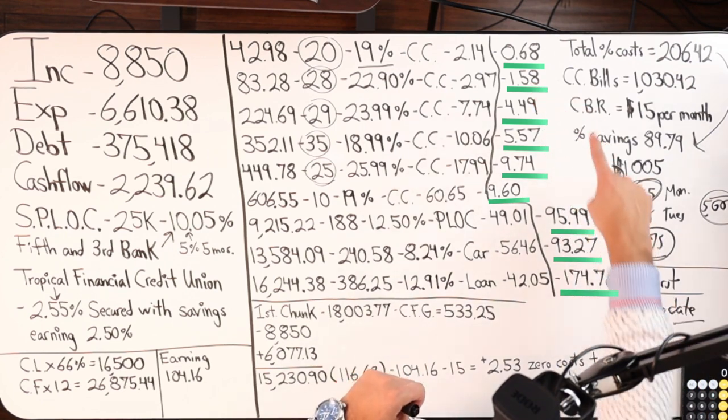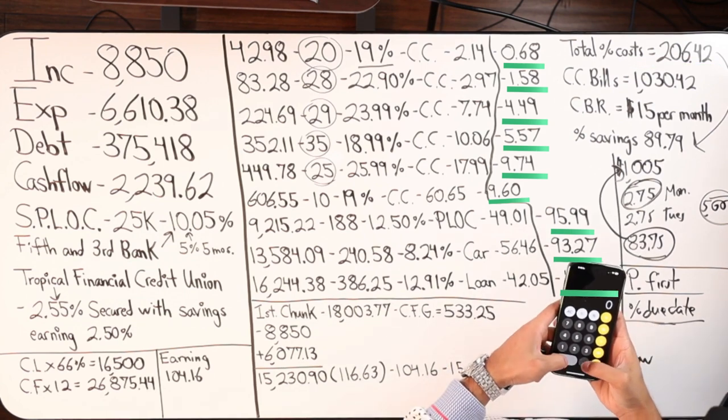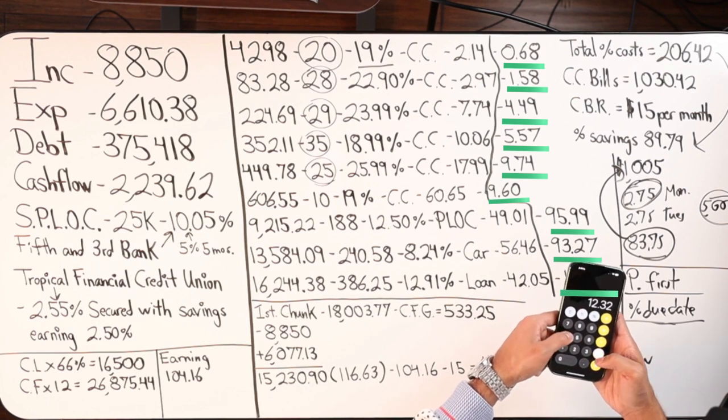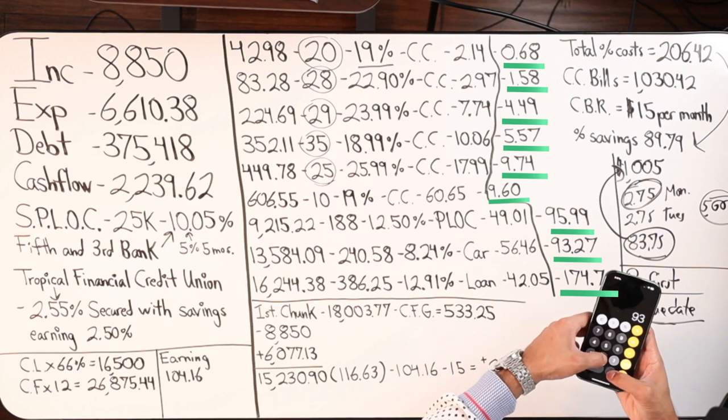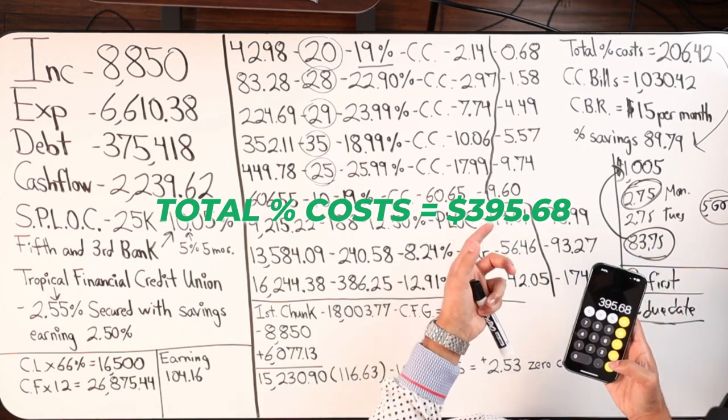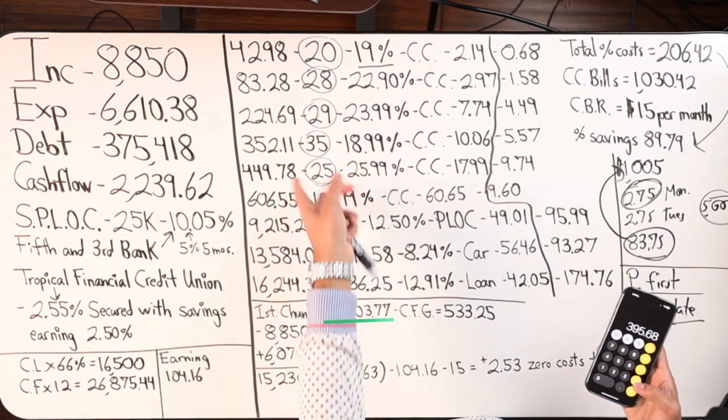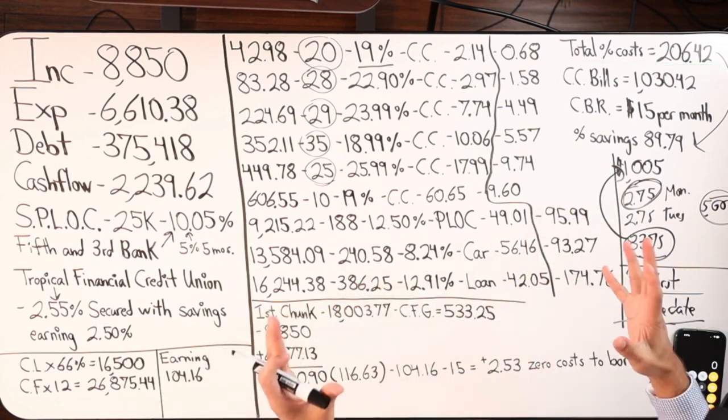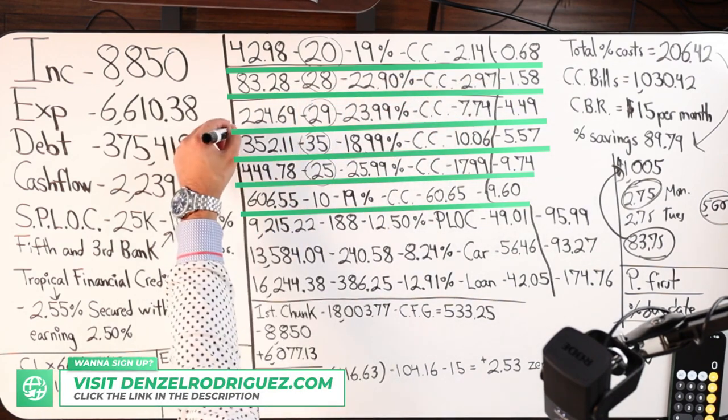So $93 here from the $240, $174 here from the $386 payment. If you were to add up all these, total cost is actually $395.68 on all of the debts. But in terms of when we do our first chunk, in terms of what we pay off, our total interest cost is $206.42. So what the client and I both came together and decided what we're going to pay off, we selected the first lowest credit cards according to cash flow index. These are definitely the most attractive. So we paid off those.